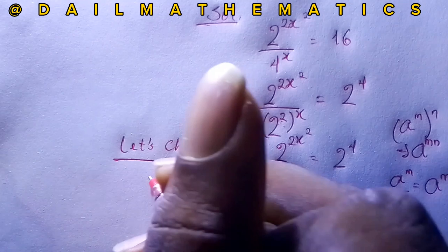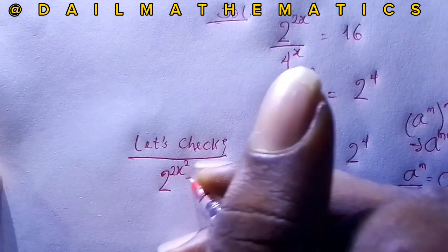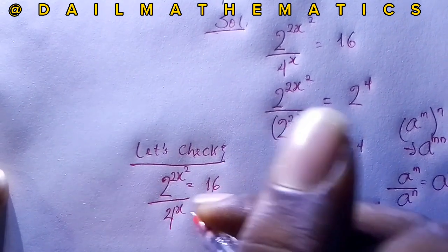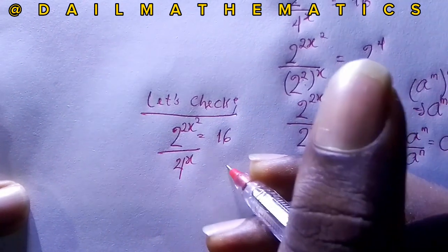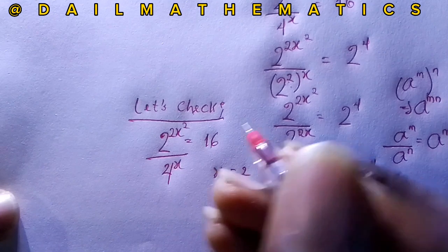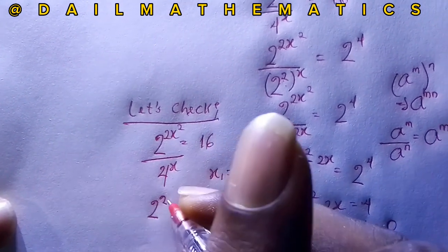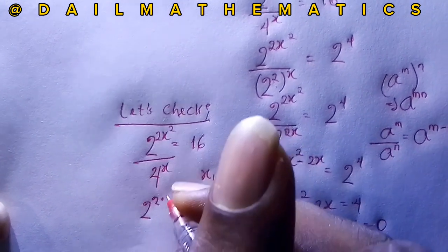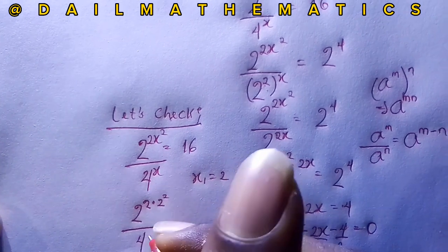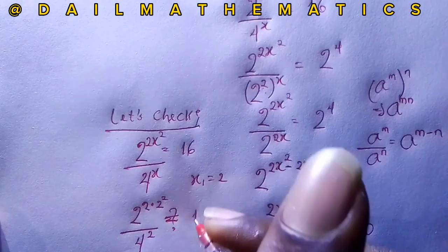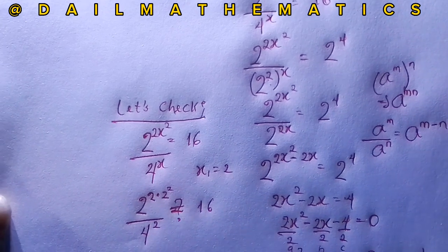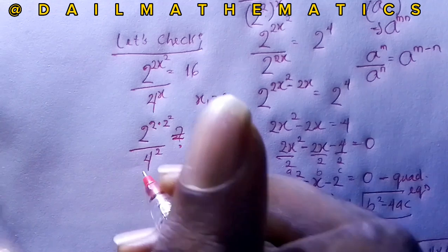Checking x₁ equals 2: substituting into the original equation gives 2 raised to the power of 2 times 2 squared, over 4 raised to the power of 2. We want to confirm this equals 16. So 2 squared is 4, and 4 times 2 is 8, giving 2 raised to the power of 8 in the numerator.